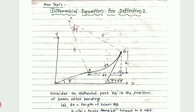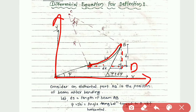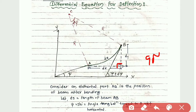Now here you can see, if I draw the arc and then draw a straight line, and if I draw from B the vertical line, it will meet at D. If I consider the X and Y axes, then dx and dy are the coordinate lengths of arc AB. The horizontal distance and vertical distance correspond to arc AB. Here angle ADB becomes 90 degrees.